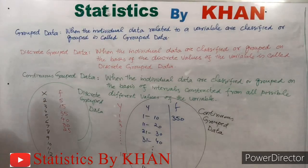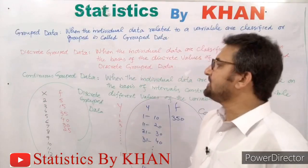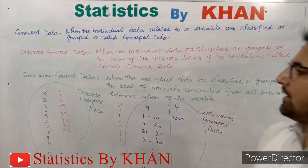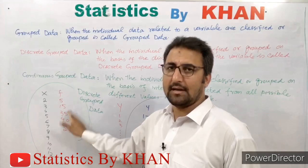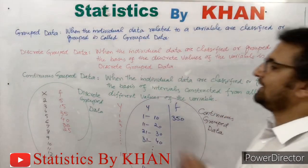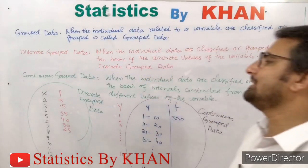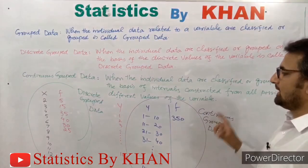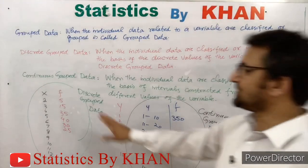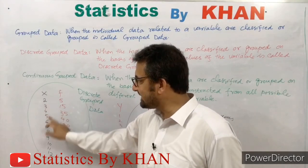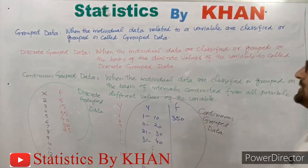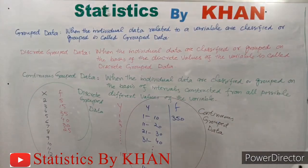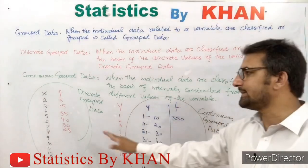Now, two important things: many students and even some books assume the discrete grouped data is ungrouped data. Do remember — both of them are grouped data. This is discrete grouped data because variable x contains discrete values, and this is continuous grouped data because variable y contains intervals of values constructed from all possible values of y.